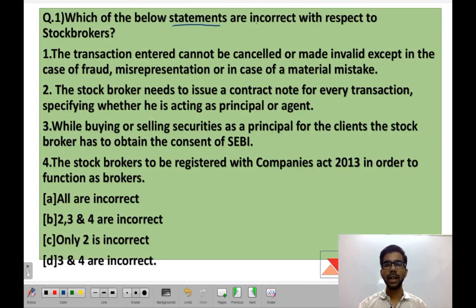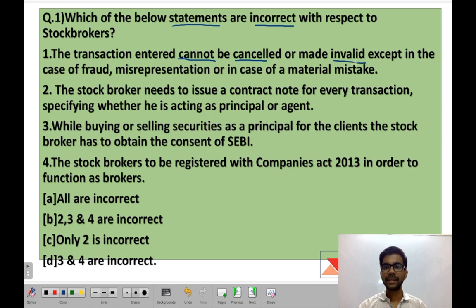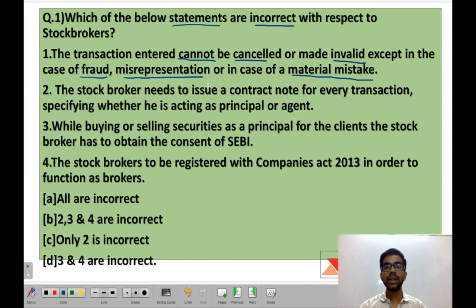Which of the below statements are incorrect with respect to stock brokers? In this question, you are given a few statements regarding stock brokers and you have to see which of these are incorrect. Statement 1: the transaction entered cannot be cancelled or made invalid except in the case of fraud, misrepresentation or in case of a material mistake. This statement says a transaction entered by a stock broker cannot be cancelled, but there are exceptions — fraud, misrepresentation, or a material (big) mistake. In these cases the transaction can be cancelled; otherwise it cannot.